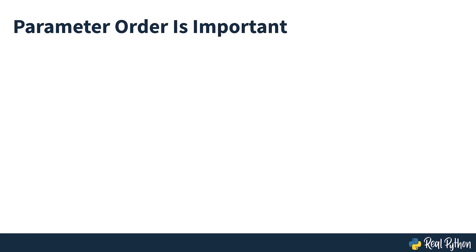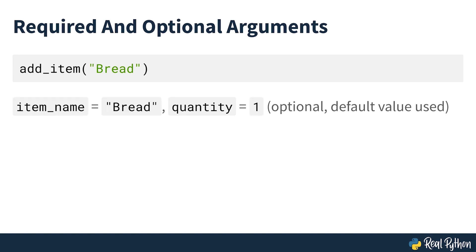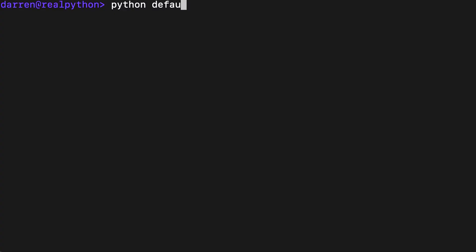Parameters with default values can't be followed by regular parameters. You'll see more about the order in which you can define parameters later on in this course. The function addItem now has one required parameter and one optional parameter. Your first function call has a single argument which corresponds to the required parameter item name — in this case, quantity defaults to 1. Your second function call has two arguments, so the default value isn't used in this case. You can see the output on screen.